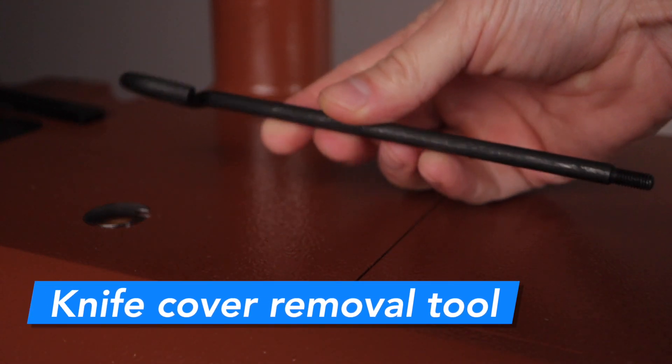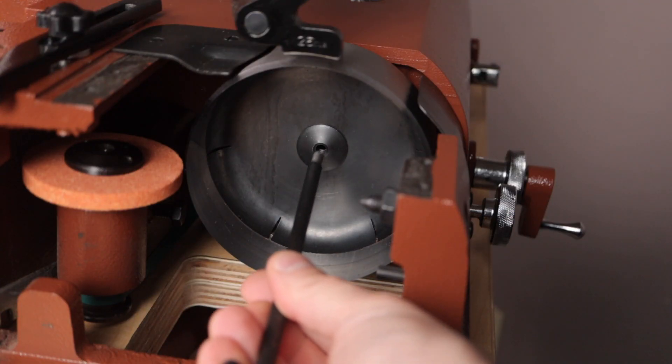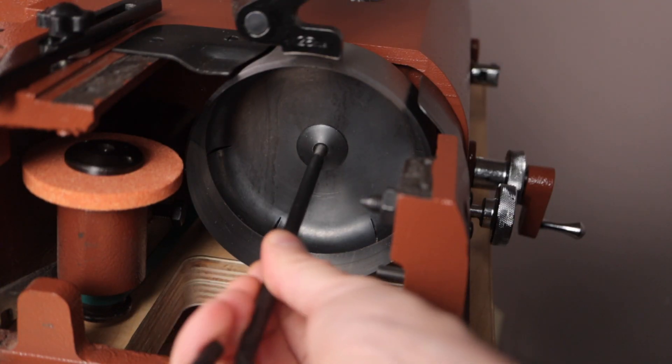Next, screw in the knife cover remover tool. To remove this cover, you want to pull and move the tool back and forth until the cover becomes unseated.